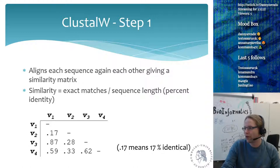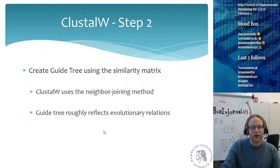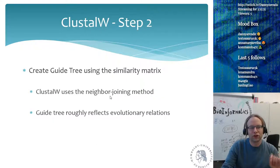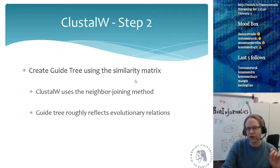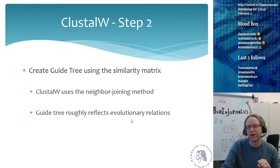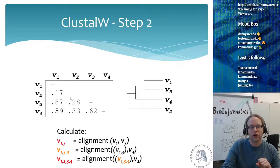This is computationally expensive, but if you use something like BLAST or another optimized algorithm, it's perfectly doable. What you then do in the next step is use this matrix to create a guide tree. The guide tree is based on the similarity matrix and you use the neighbor joining method, and the guide tree roughly reflects evolutionary relationships.